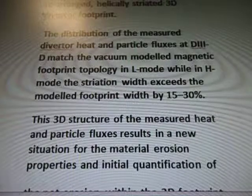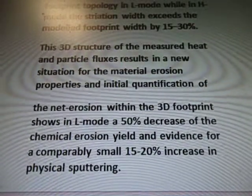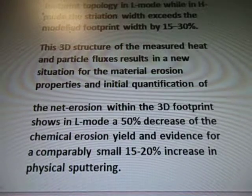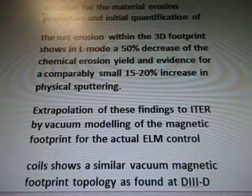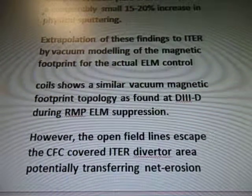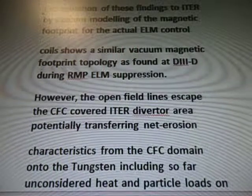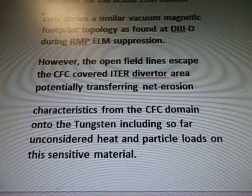Footprint topology in L mode with an H mode. The striation width exceeds the model footprint width by 15 to 30 percent. This 3D structure of the measured heat and particle flux results in a new situation for the material erosion properties. Initial quantification of the net erosion within the 3D footprint shows in L mode a 50 percent decrease of the chemical erosion yield and evidence for a comparably small 15 to 20 percent increase in the physical sputtering. Extrapolation of these findings to ITER by vacuum modeling of the magnetic footprint for the actual ELM control coils show a similar vacuum magnetic footprint topology found at D3-D during RMP-ELM suppression. However, the open field lines escape the CFC-covered ITER diverter area, potentially transferring net erosion characteristics from the CFC domain onto the tungsten, including unconsidered heat and particle loads on the sensitive material.